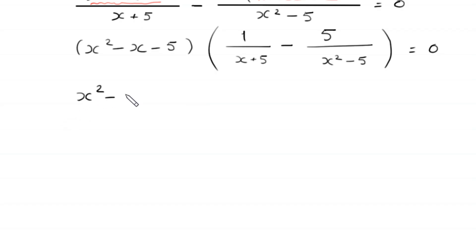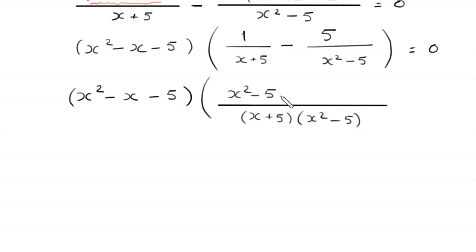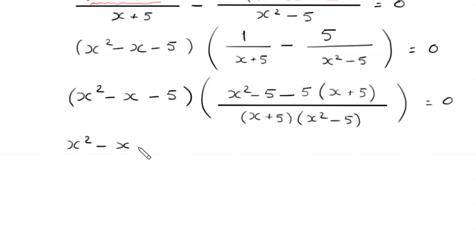Next, x squared minus x minus 5 times: we take the LCM of x plus 5 and x squared minus 5. The LCM is x plus 5 times x squared minus 5. When we divide this LCM by x plus 5 we get x squared minus 5, so x squared minus 5 times 1 is x squared minus 5, and the minus comes here. When we divide this LCM by x squared minus 5 we get x plus 5, so we multiply this 5 by x plus 5.